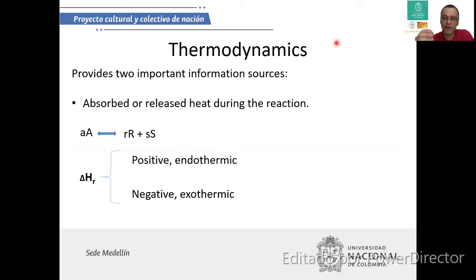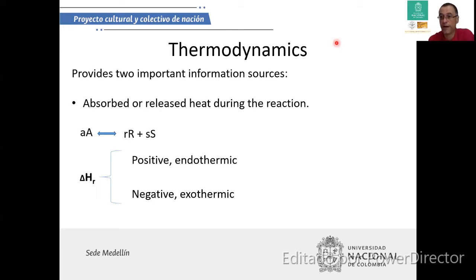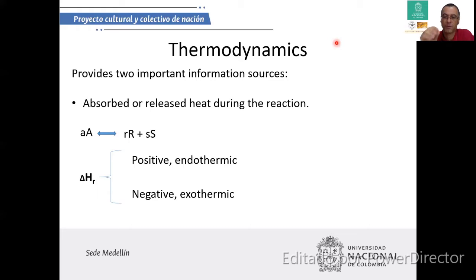When you study thermodynamics, you define the quantity of internal energy, the quantity of heat, or the quantity of work during the process. If the reaction needs energy to work, it is an endothermic reaction; if the reaction produces energy, the process is exothermic. In an endothermic process the quantity of heat is positive; in an exothermic reaction it is negative. When working at constant pressure (isobaric process), the quantity of heat is equivalent to enthalpy.